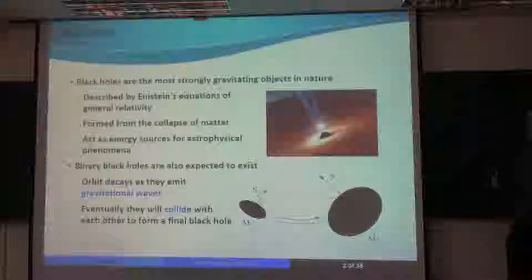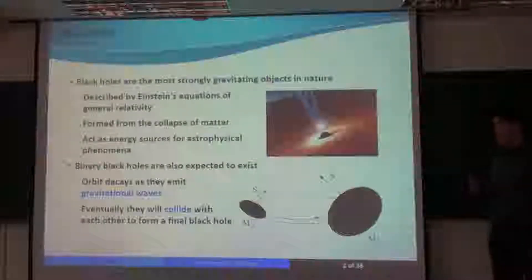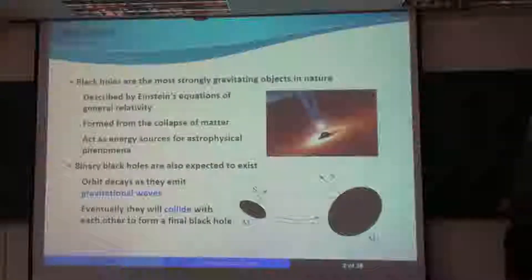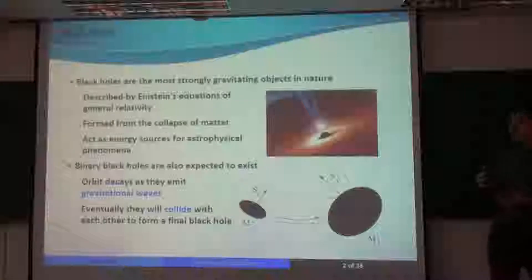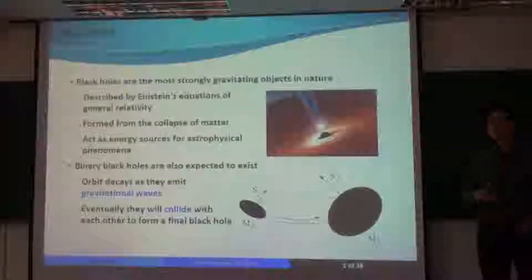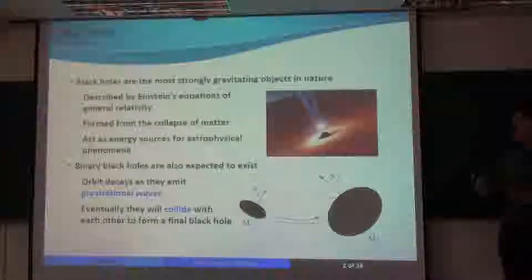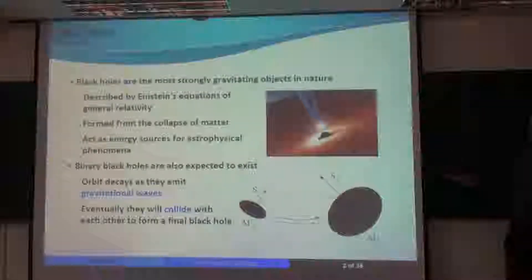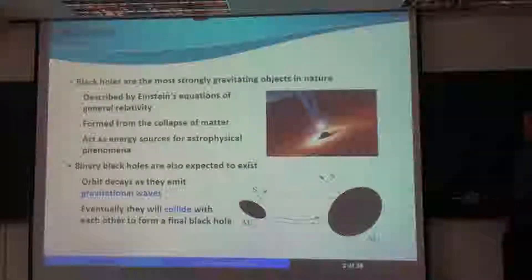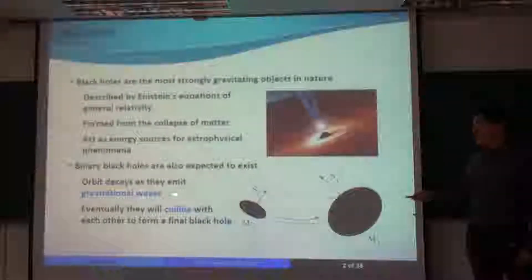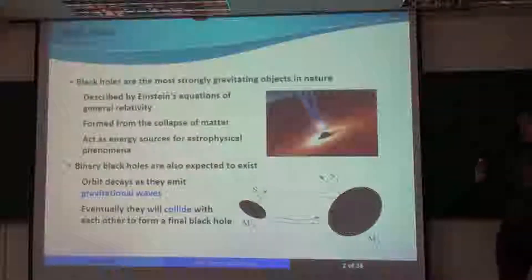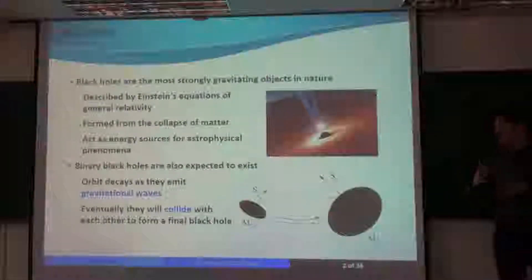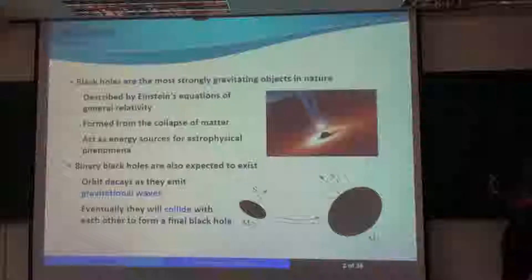And for binary black holes, they orbit each other. Here's just a schematic picture of a binary black hole. As they orbit around each other, they emit gravitational waves, as ripples in the curvature of spacetime that propagate away from these black holes. These gravitational waves carry away energy as they propagate. This causes the orbits of the two black holes to shrink, and eventually they will collide with each other and form a final bigger black hole.